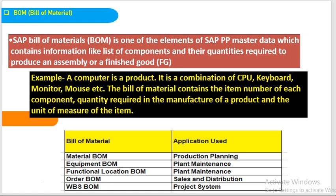BOM — Bill of Material — is one of the master data in the PP module. It is completely master data. It contains the information of components, their quantities, required to produce an assembly or a finished good (FG). In order to produce a finished good, we need some components — without these components we cannot call a product a finished good.